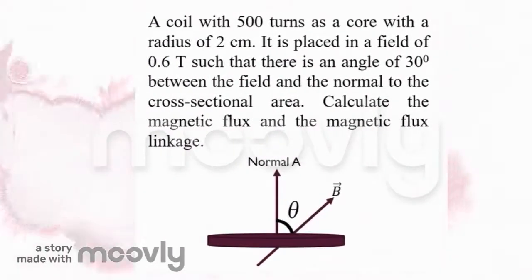Now let's try a sample question. A coil with 500 turns has a radius of 2 centimeters. It is placed in a field of 0.6 Tesla such that there is an angle of 30 degrees between the field and the normal to the cross-sectional area. Calculate the magnetic flux and the magnetic flux linkage.